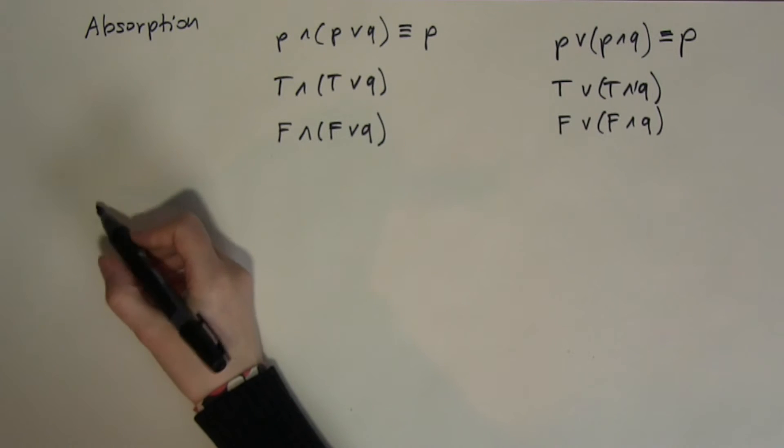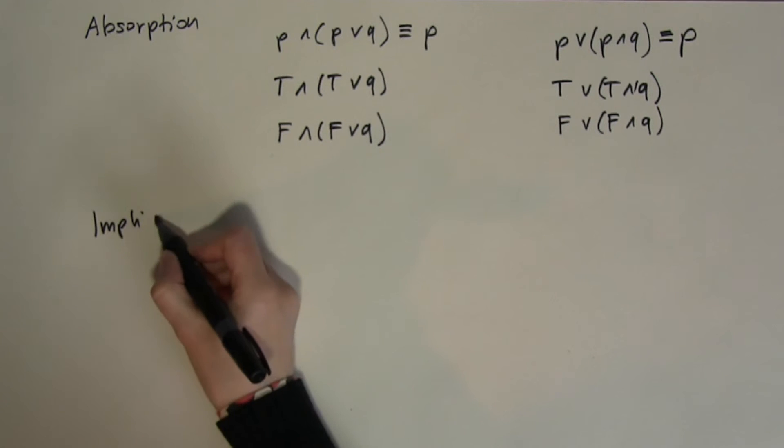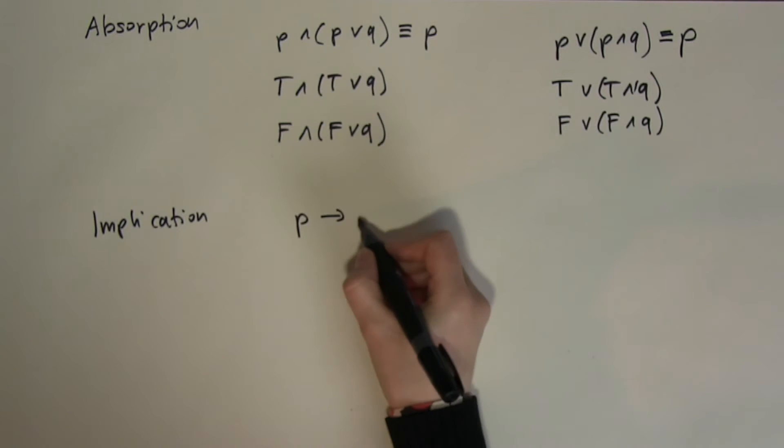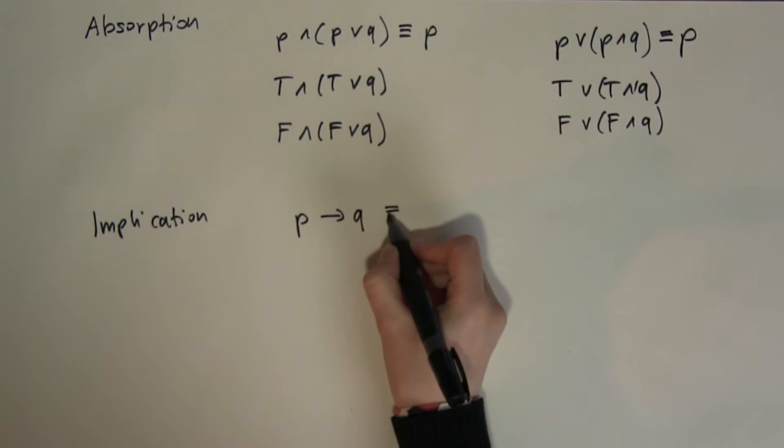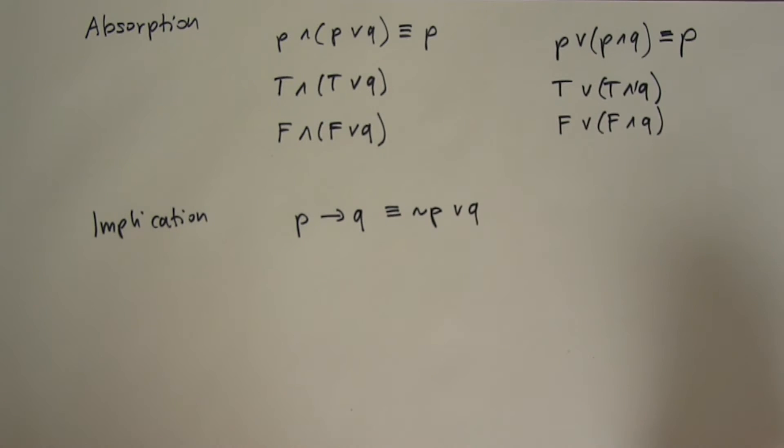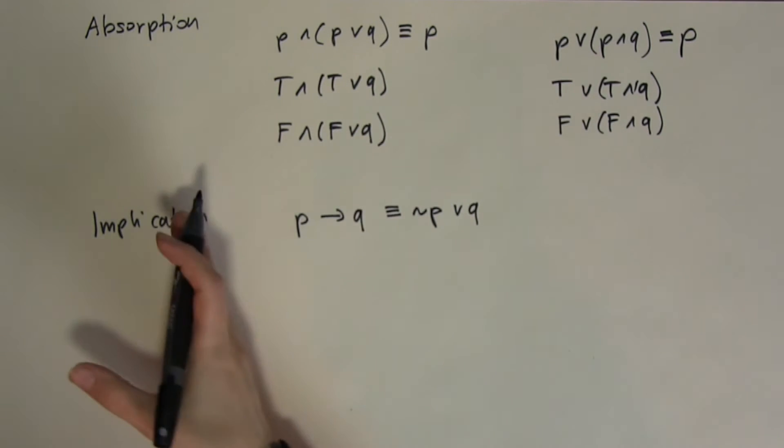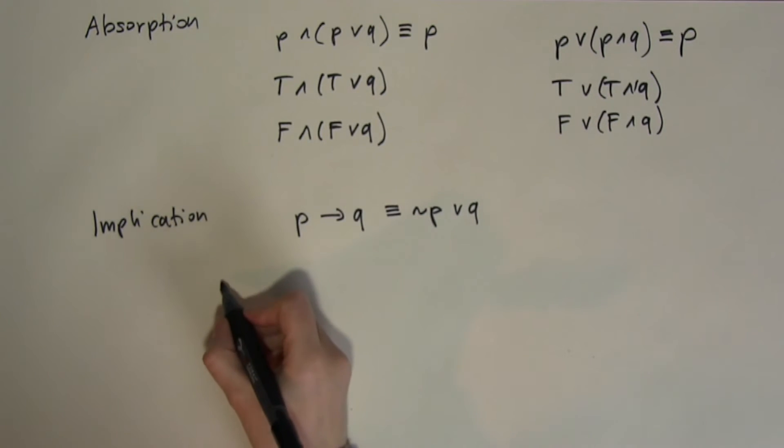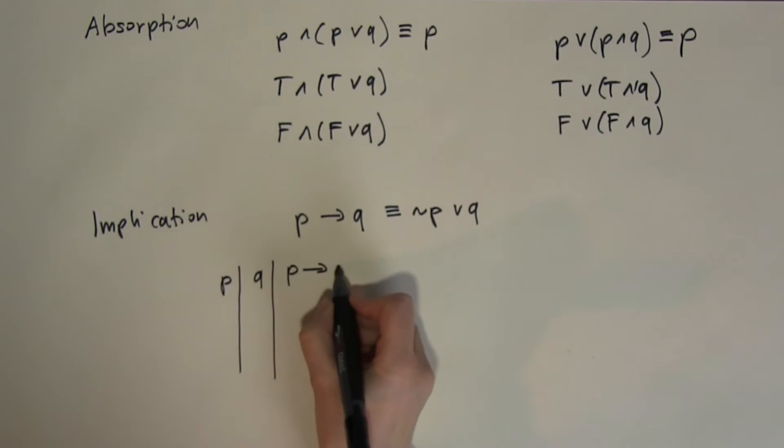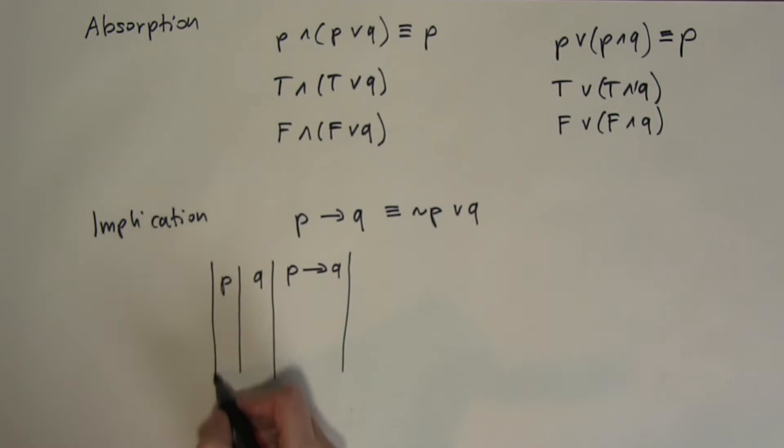The next law is implication. And the implication states that P if then Q is logically equivalent to not P or Q. Now the easiest way to convince you that this is true is to look at the truth tables for both of them. So P, Q, P if then Q. What was the truth table?